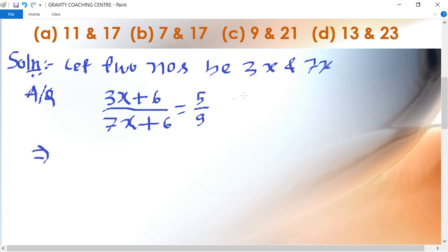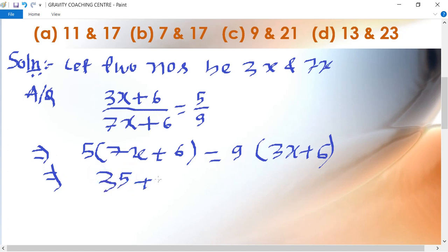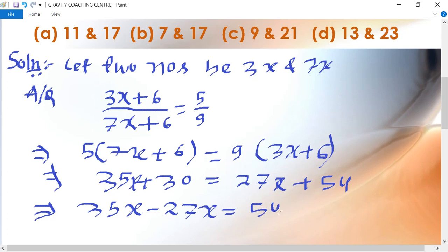5 times 7x plus 6 and 9 times the bracket of 3x plus 6 equal to 35x plus 30 equal to 27x plus 54.